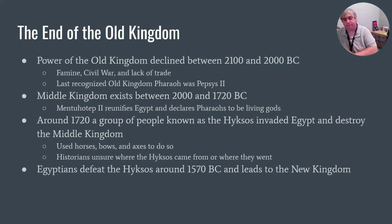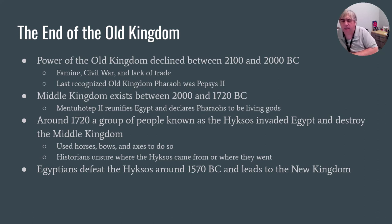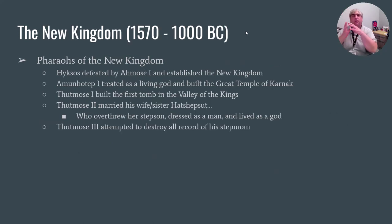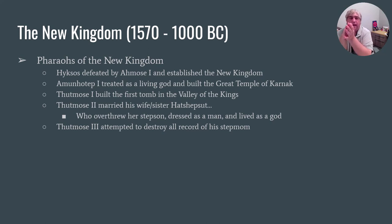What we do know is the Hyksos used horses, bows, and arrows. They came in, took over the Middle Kingdom around 1720 BC, and by 1570 BC the Hyksos had been defeated by the Egyptians and forced out of Egyptian territory. Once the Egyptians take over again, that's the beginning of the New Kingdom. The New Kingdom lasts for about 400 to 500 years, and the pharaohs of the New Kingdom are viewed as gods.